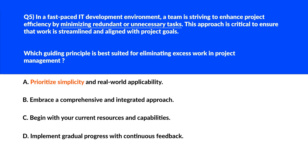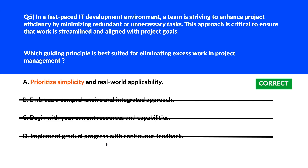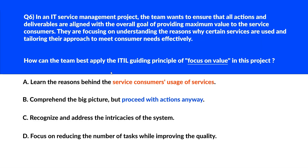Option C — 'begin with your current resources and capabilities' — supports making incremental improvements from the existing state but does not directly address reducing unnecessary tasks, so we'll eliminate it. Option D — 'implement gradual progress with continuous feedback' — focuses on iterative work with feedback, which is essential for progress but does not specifically address eliminating unnecessary work. We'll lock option A as the right answer.